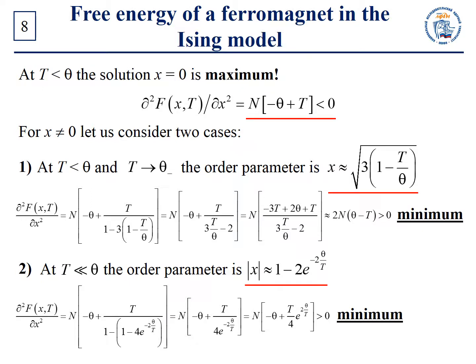It can be shown that at any given temperature in the range from zero to theta, the solution of the Curie-Weiss equation with x not equal to zero corresponds to a local minimum of free energy, and the solution with x equal to zero corresponds to its local maximum. Finally, we obtain that at T greater than theta the paramagnetic state is realized, and at T less than theta the ferromagnetic state occurs.